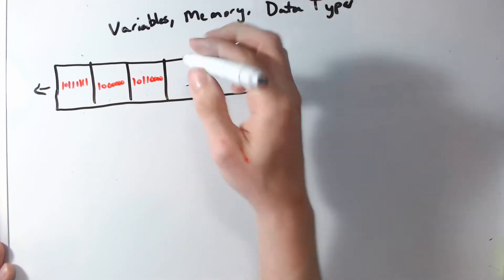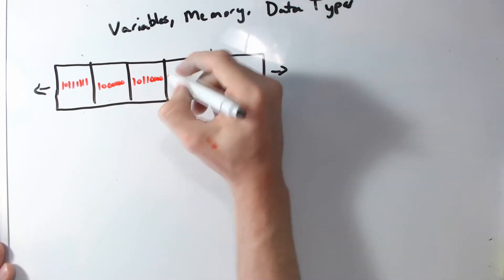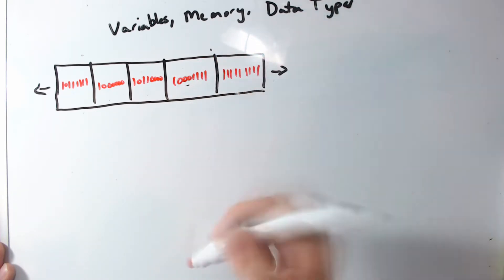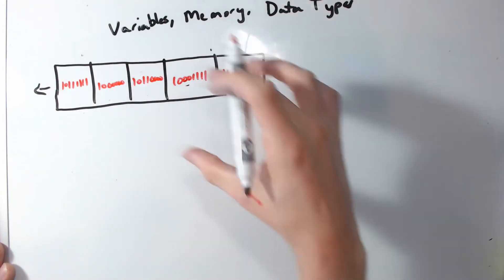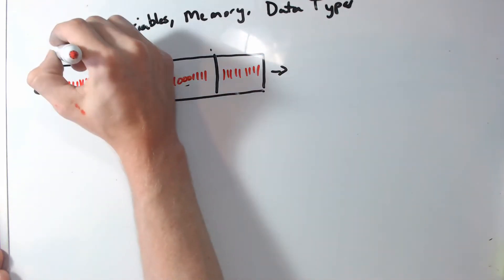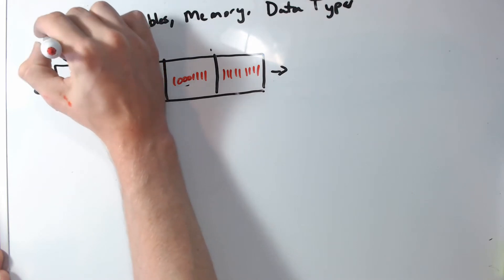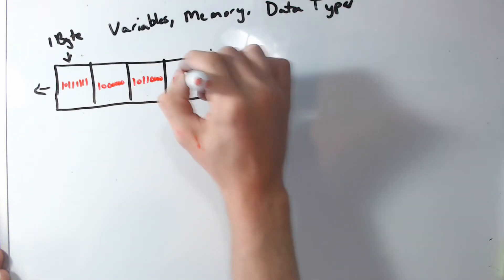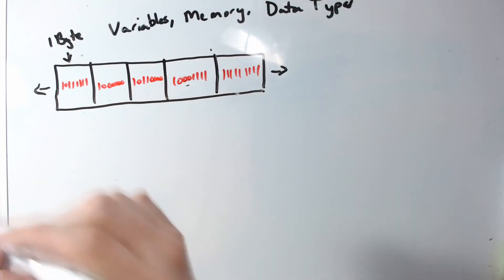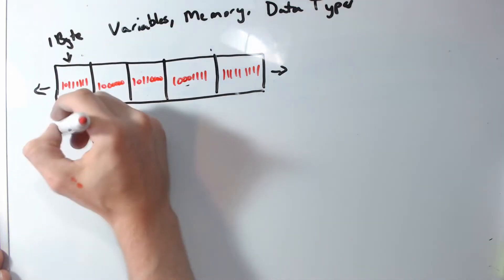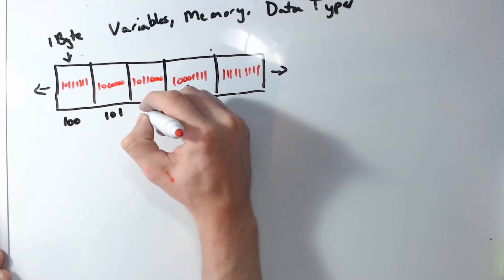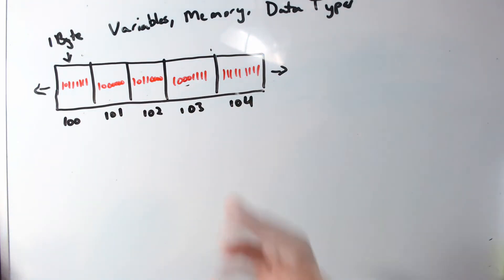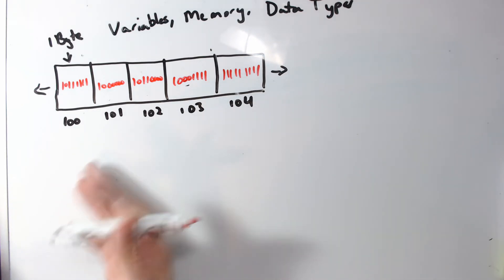So we have eight bits here — something like 1 0 1 1 0 0 0 0, then 1 0 0 0 1 1 1 1. We've sectioned off pieces of eight bits. We call these bytes. So this is one byte, this is one byte, this is one byte. And each of these boxes has an address, so we can label them as 100, 101, 102, 103, 104.